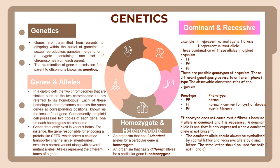Genes frequently exist in various forms. For instance, the gene responsible for encoding a protein like CFTR, which forms a chloride transporter channel in cell membranes, exhibits a normal variant along with several mutant alleles. Alleles represent the different forms of a gene. An organism that has two identical alleles for a particular gene is homozygous. An organism that has two different alleles for a particular gene is heterozygous.